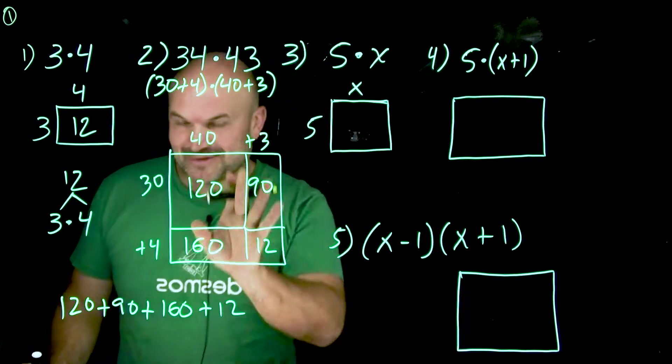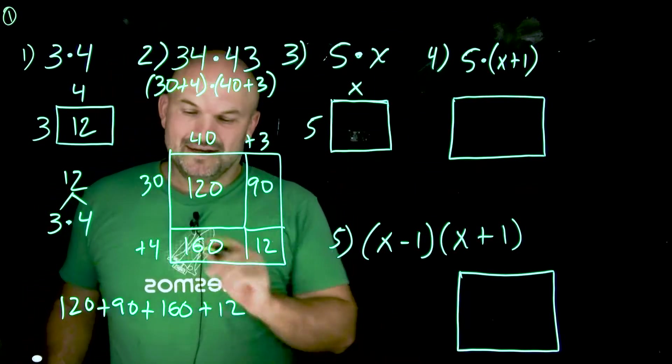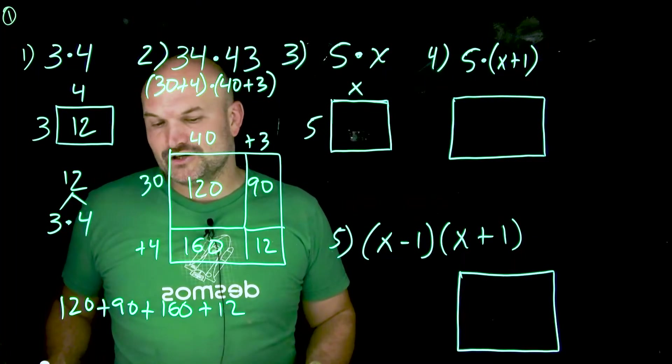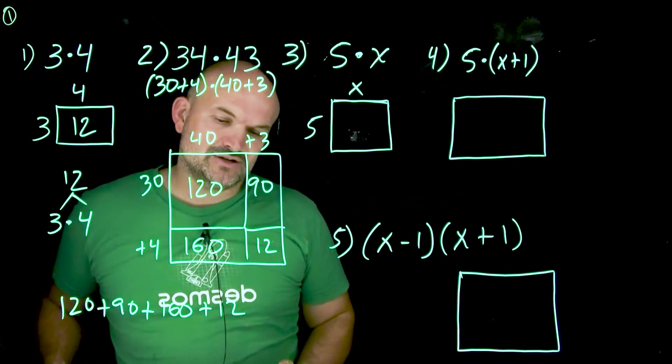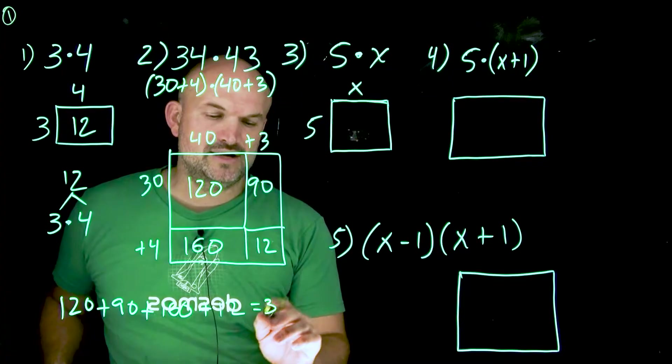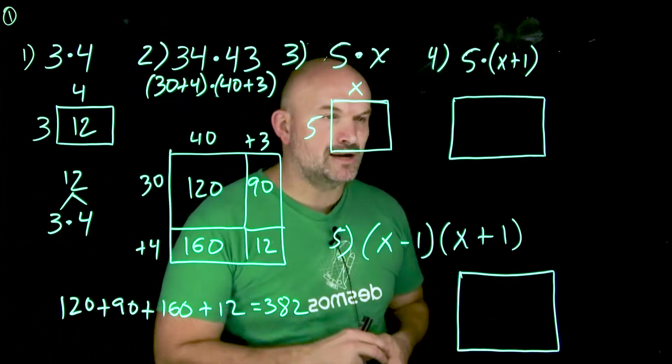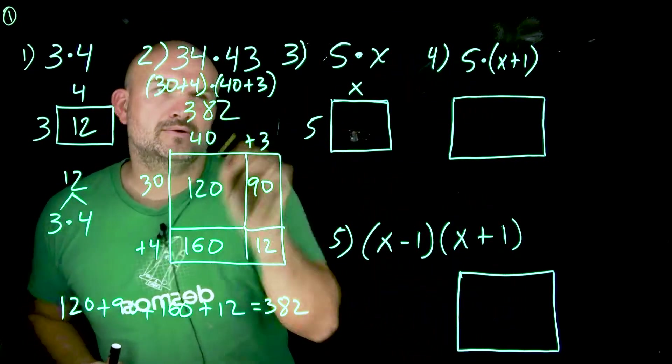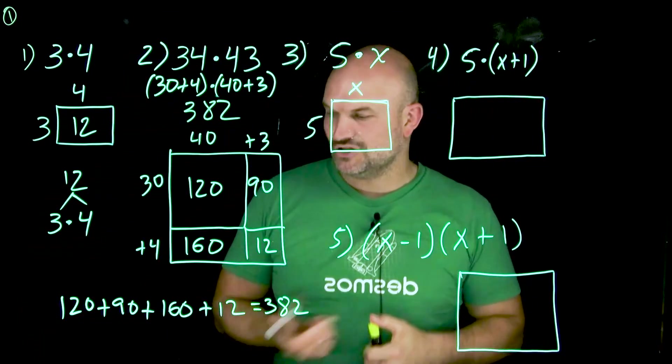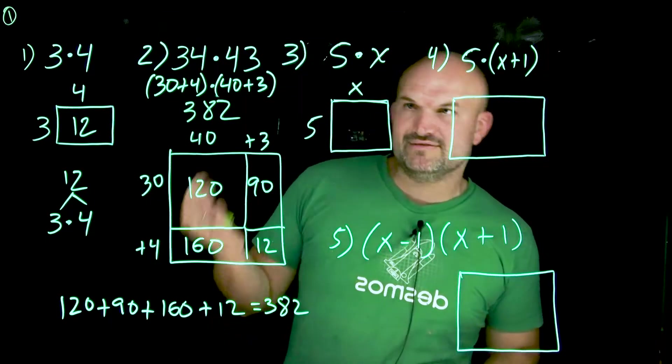And I might make a mistake too. So be careful. It's going to be 210 plus 160 is going to be 370. And then 370 plus 12 is going to be 382. All right. So now let's get into a little bit more abstractness and that's going to be variables.